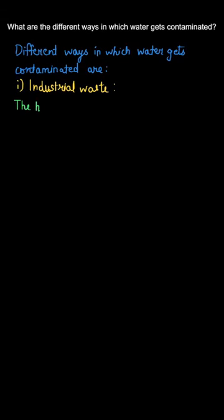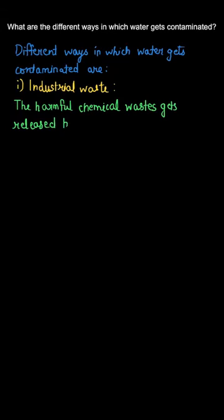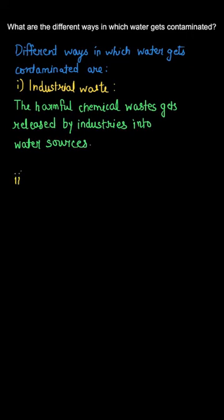The first one is industrial waste. As we know, there are harmful chemicals that have been used in industries, and there are certain by-products which are hazardous in nature. These by-products are released into water, which causes industrial waste and creates water pollution.